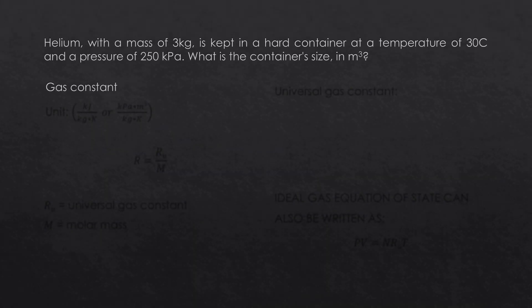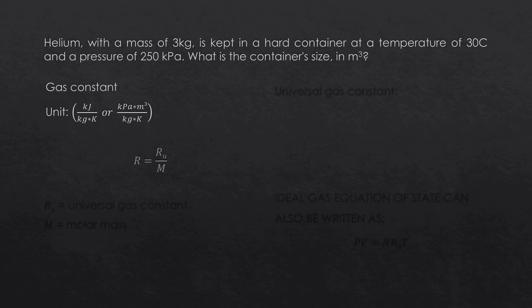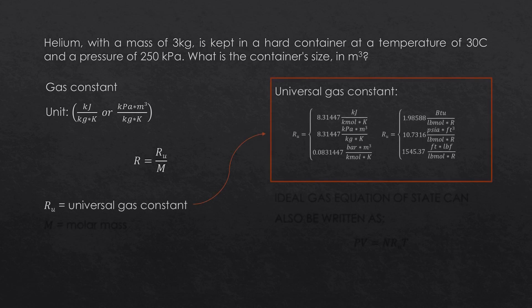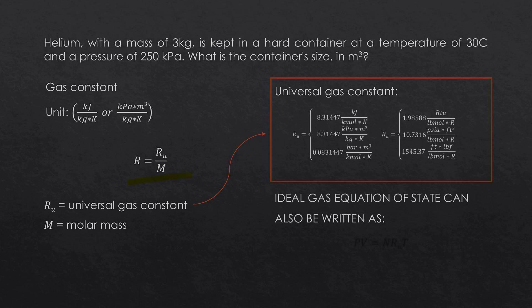The gas constant commonly has units of kilojoules per kg times Kelvin, or kilopascals times cubic meters per kg times Kelvin. It is given by the equation R equals R sub U over M, where R sub U is the universal gas constant and M is the molar mass. We can also rewrite the ideal gas equation of state as PV equals N times R sub U times T.